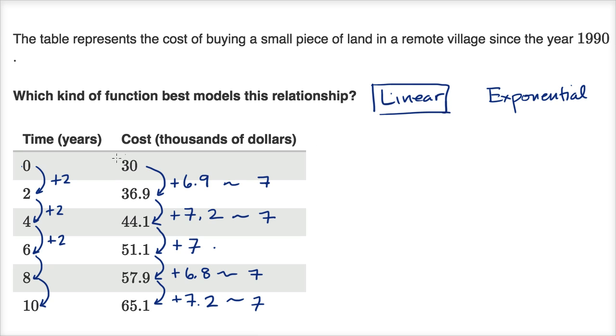You could test whether it's an exponential model. You see, well, what factor am I multiplying each time? But that doesn't seem to be as, this doesn't seem to be growing exponentially. It doesn't seem like we're multiplying by the same factor every time. It seems like we're multiplying by a slightly lower factor as we get to higher costs. So the linear model seems to be a pretty good thing.